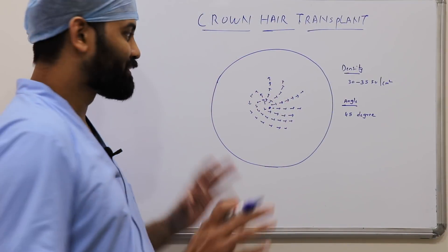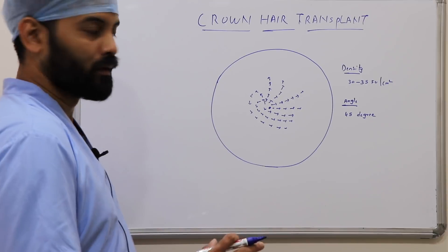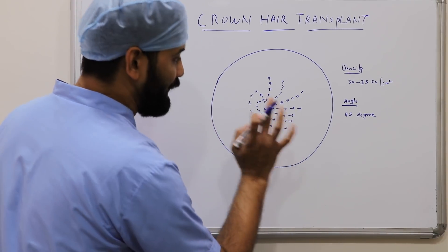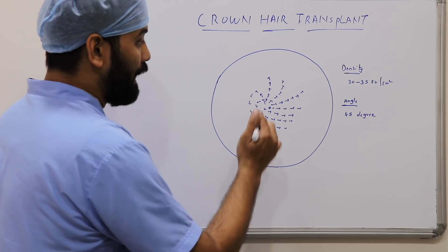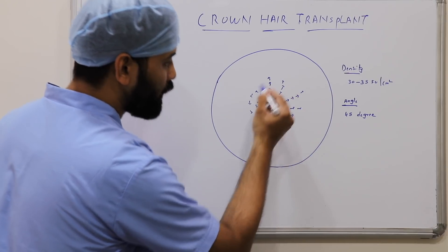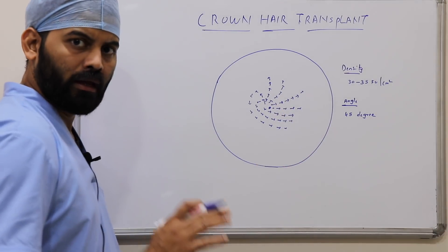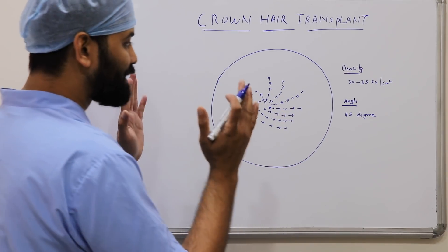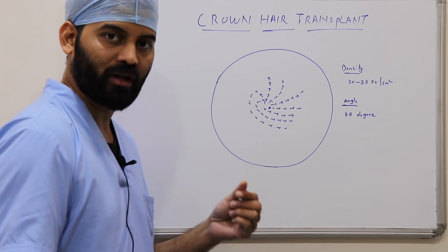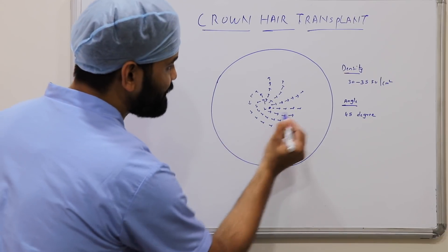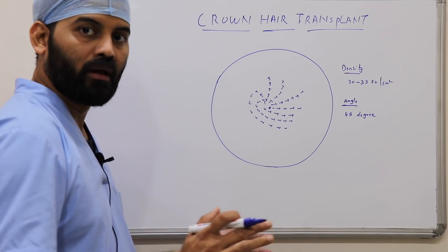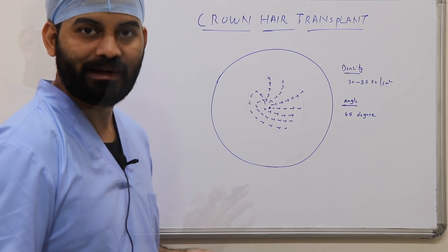Now coming to the slit-making process. While making the slits, we use an 18-gauge blade or a slit blade, and the angle and direction of the slits are parallel to and according to the existing whorl pattern. In the maximum number of cases, the patient doesn't get completely bald in the crown area but has miniaturized hair left. So the angle and direction of the slits are parallel to those hairs so that it completes the whorl and we get a complete whorl out of the slits.